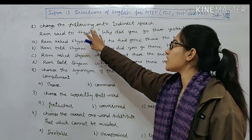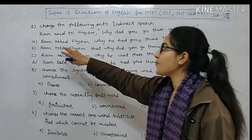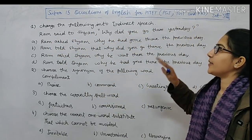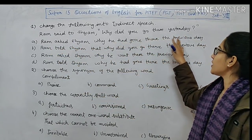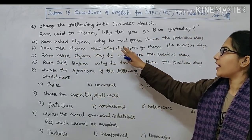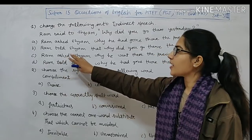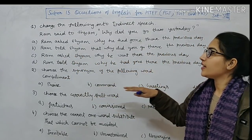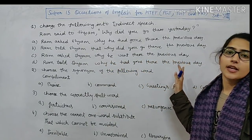First question: change the following into indirect speech. This is a narration question. Let's see the sentence. Ram said to Shyam, 'Why did you go there yesterday?' Option A: Ram asked Shyam why he had gone there the previous day. Option B: Ram told Shyam that why did you go there the previous day. Option C: Ram asked Shyam why he went there the previous day. Option D: Ram told Shyam why he had gone there the previous day.